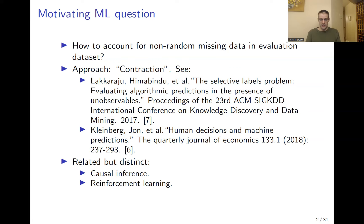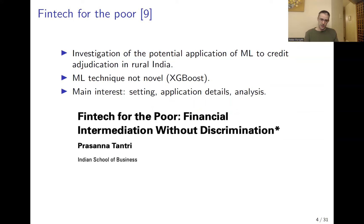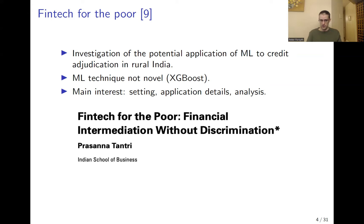With this motivating question in mind, let's proceed to discuss the paper itself. The paper is called "Fintech for the Poor: Financial Intermediation Without Discrimination." The author is Prasanna Tantri from the Indian School of Business. This paper is broadly speaking an investigation of the potential application of machine learning to credit adjudication in rural India. The machine learning technique it uses is XGBoost — an off-the-shelf gradient-boosting classifier that's quite high quality. This technique is not really the focus of the paper.